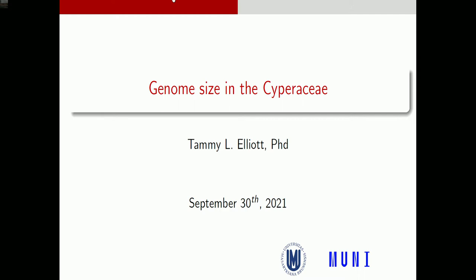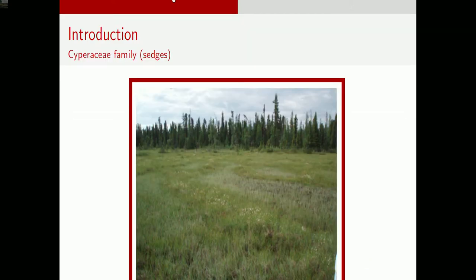I'll start with a little introduction to sedges. This image is from the Canadian subarctic — what we call a fen, a miniotrophic peatland dominated by Cyperaceae. Within small areas of that fen, you can have as many as 15 species within maybe a couple of square meters.